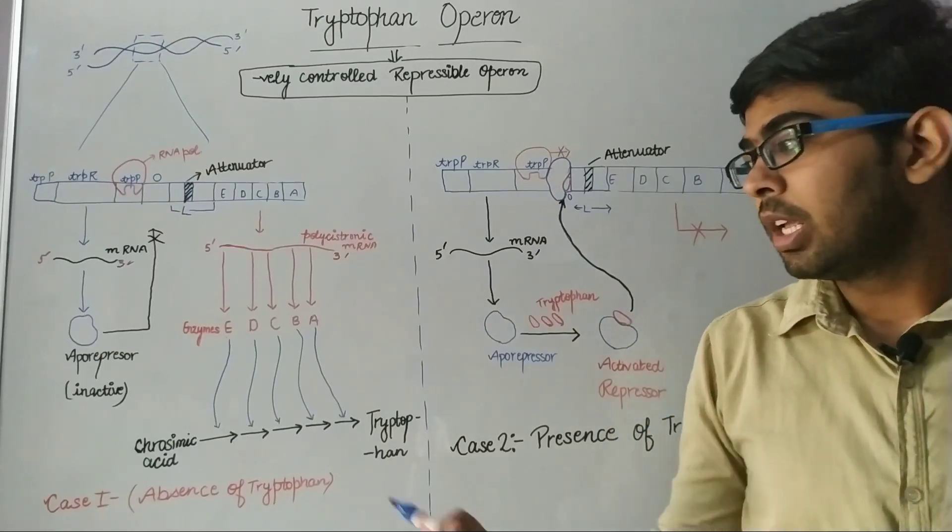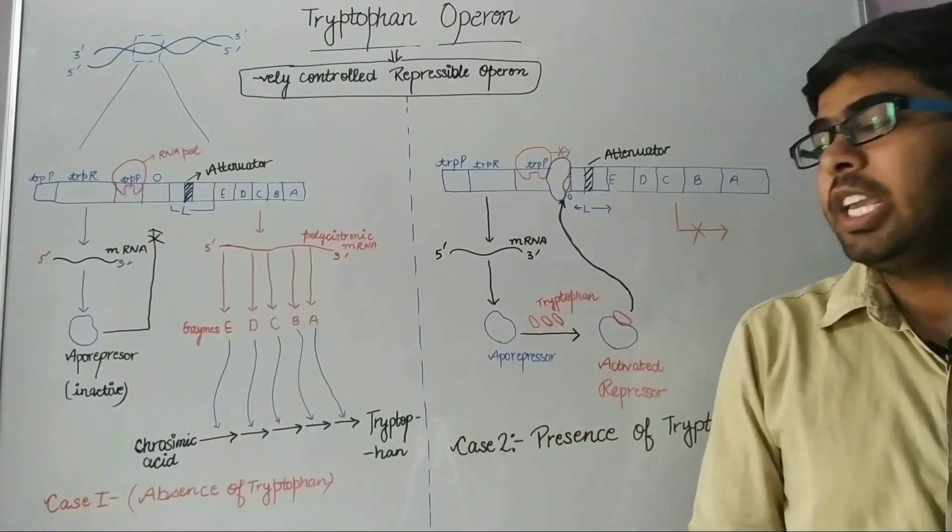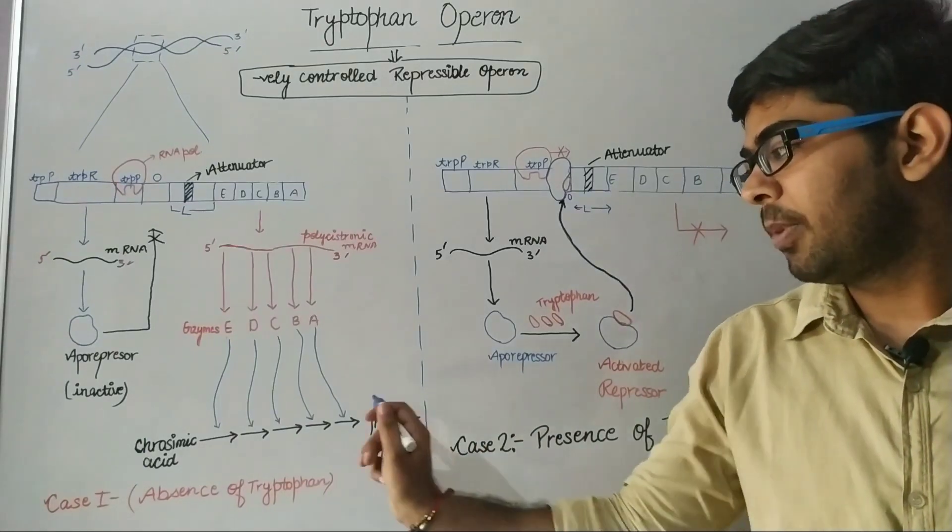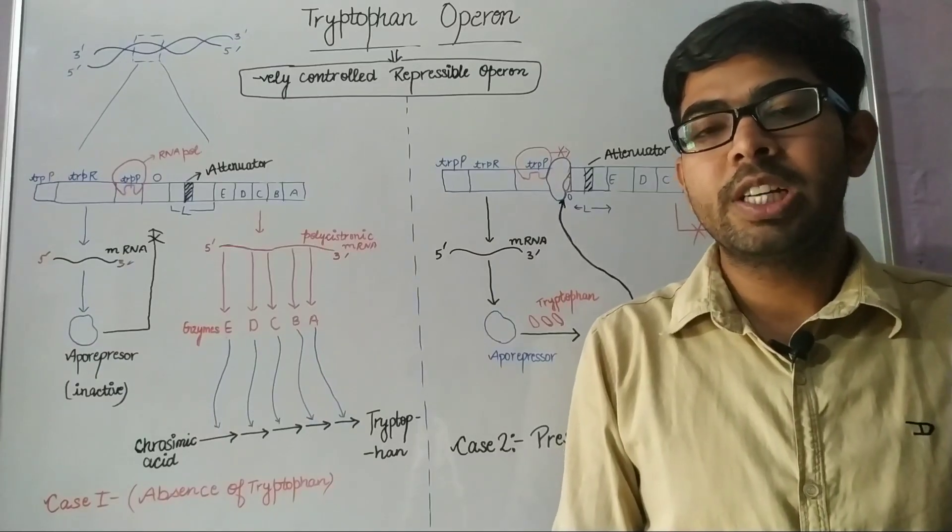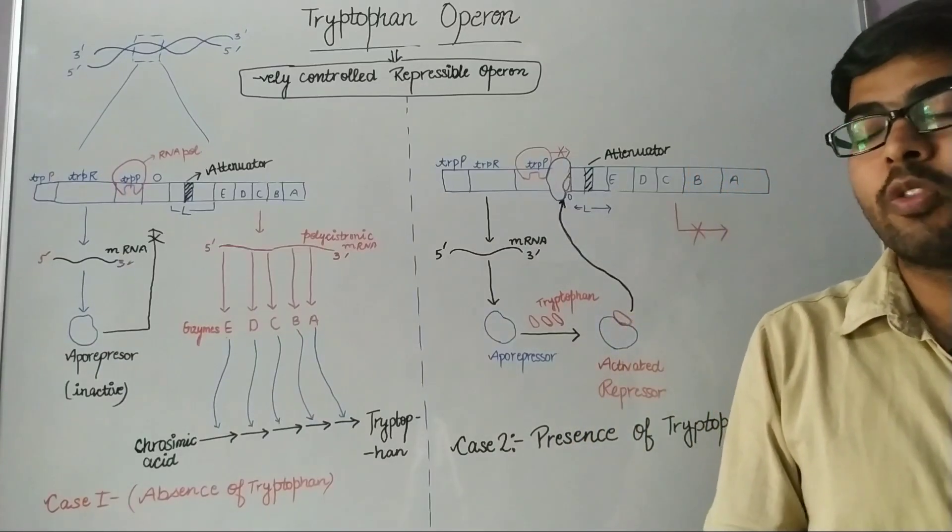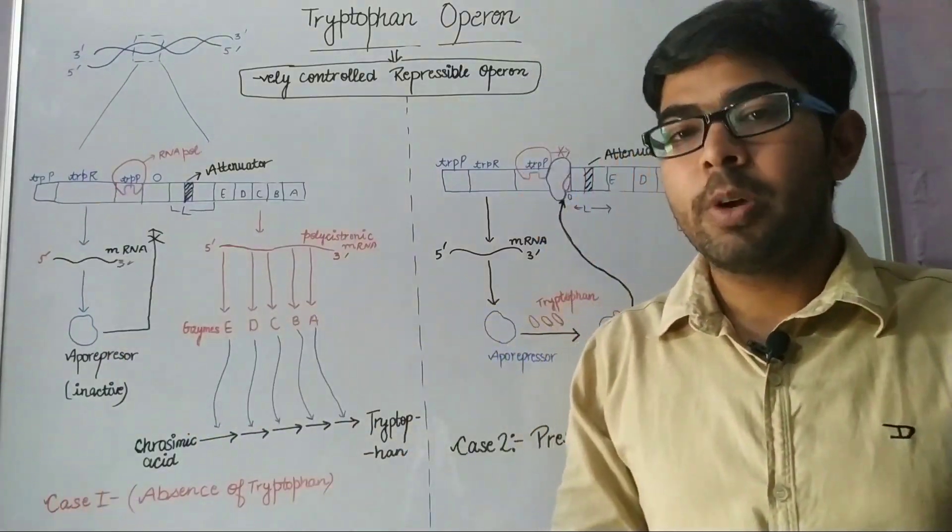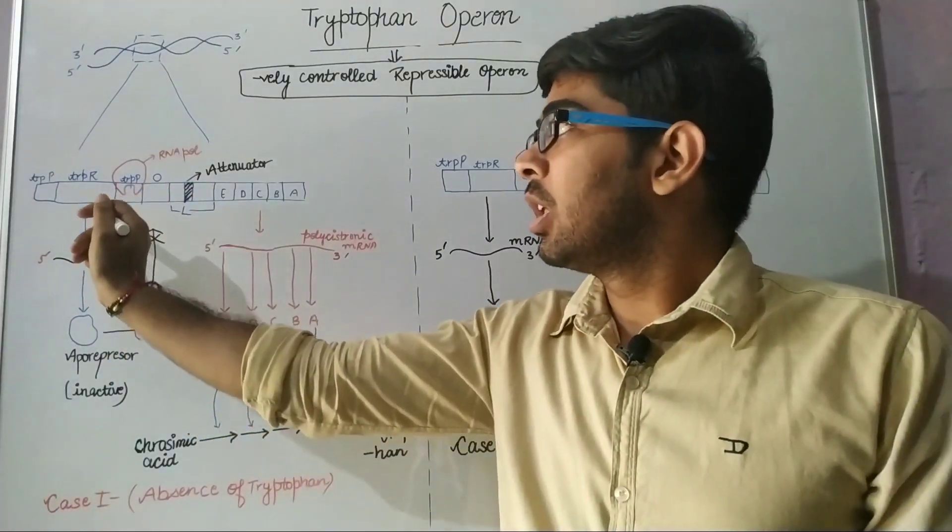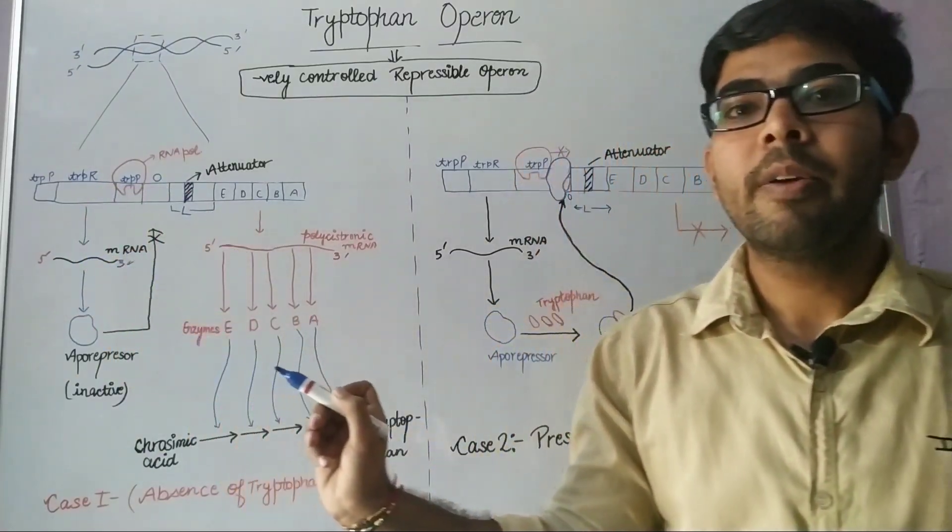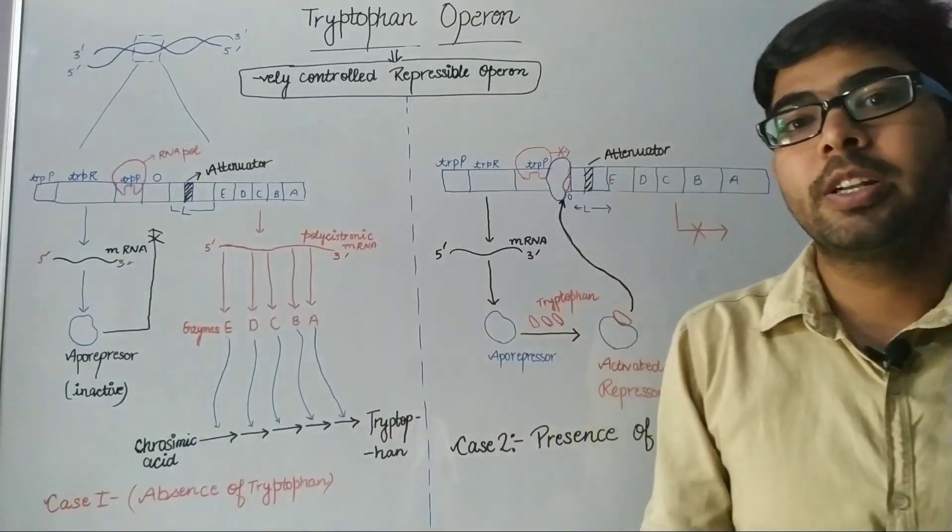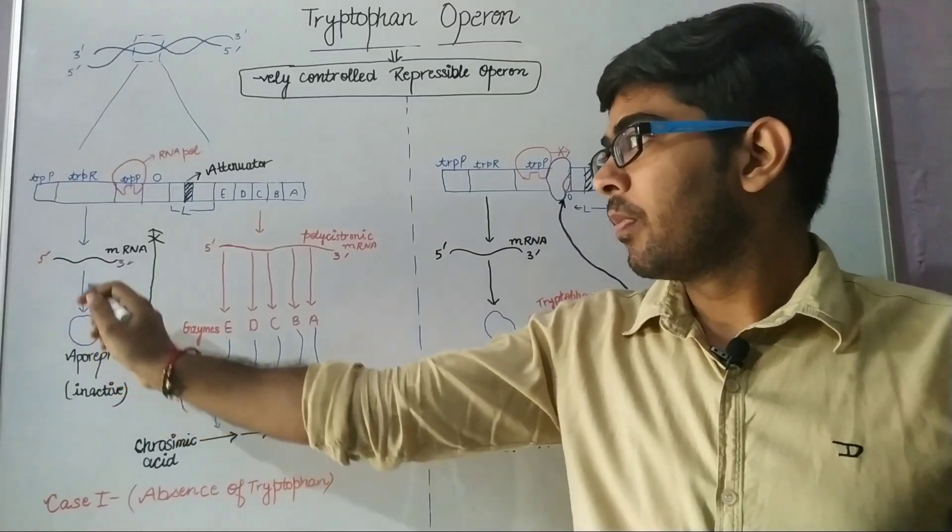When tryptophan is absent in E. coli cytoplasm, tryptophan is synthesized by E. coli because tryptophan amino acid is a very important constituent for basic cellular functions. In the absence of tryptophan, the tryptophan regulatory gene encodes mRNA by the process of transcription.